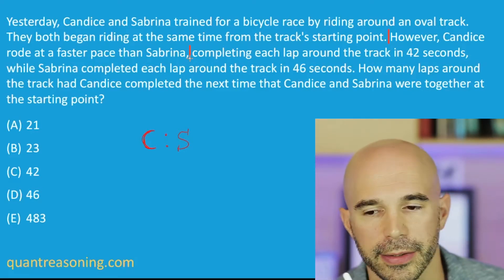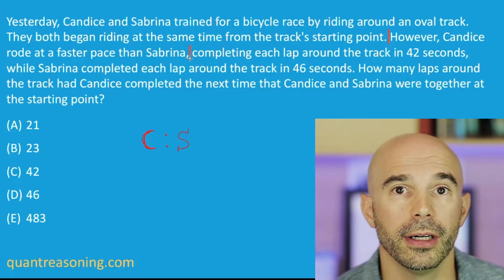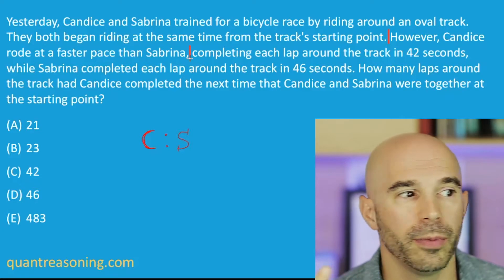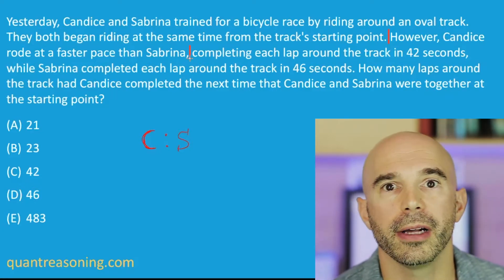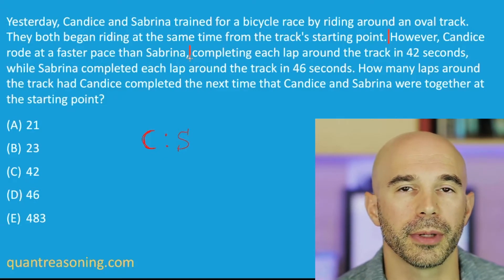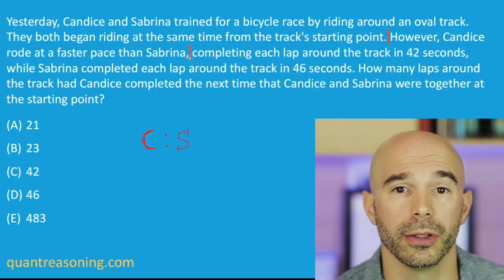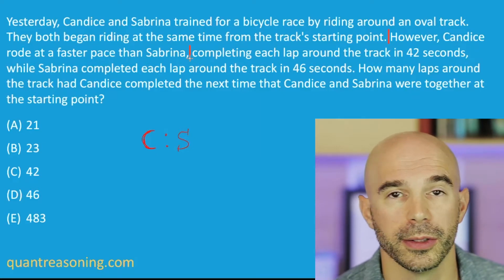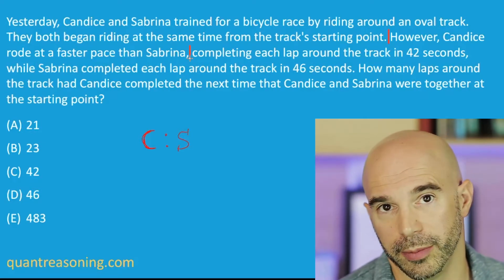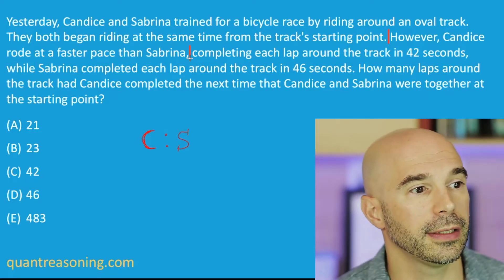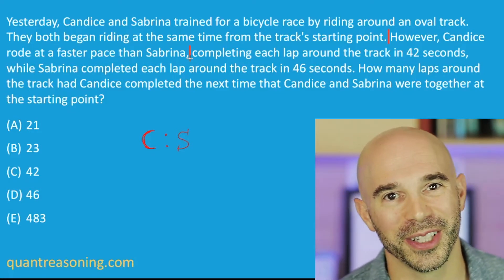C is faster than S. By what reason, I don't know, and I might never know. Maybe if I read on it'll say how much is Candice faster than Sabrina — she's three miles per hour faster. If she's three miles per hour faster, can I infer the ratio? No, I don't know if the speeds are four and one or ten and seven. Those are different ratios. Also, maybe they'll just say C is faster than S, period, and I still wouldn't be able to infer a ratio.